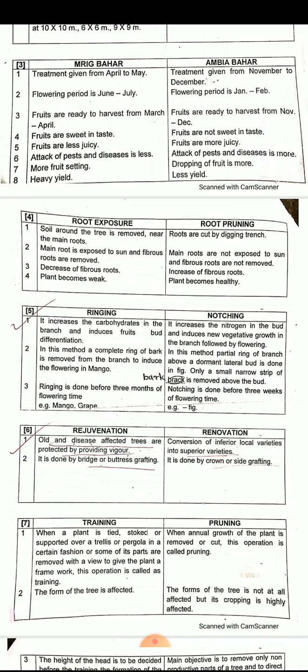In ringing, a complete ring of bark is removed from the branch to induce flowering — this is done in mango. In notching, a partial ring above a dormant lateral bud is made — only a small narrow strip of bark is removed — and this is done in fig.